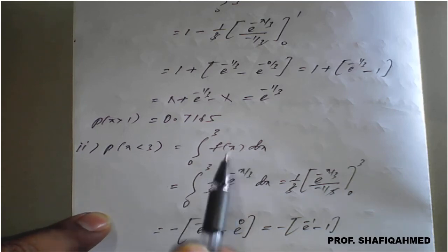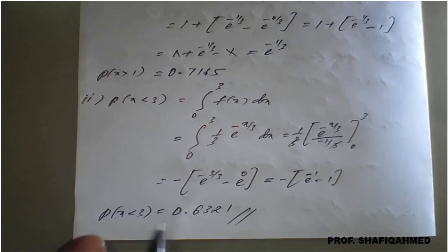Therefore, we know that our f(x) is 1 by 3 times e raised to minus x upon 3 dx. On simplification of the upper and lower limit, we will get the answer as 0.6321.